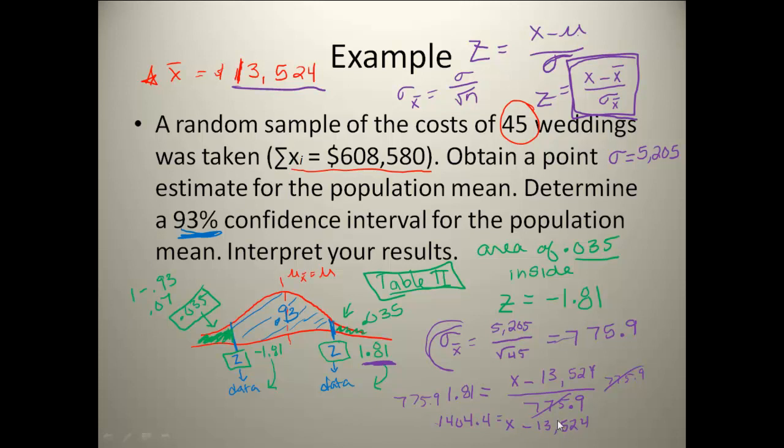Well, in order to get rid of that minus 13,000, I have to add 13,524 to both sides. And when I end up doing that, I end up getting my x-value is equal to 14,928.38. So that's my upper data point here, and it's the upper one because I used the positive 1.81.